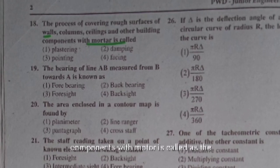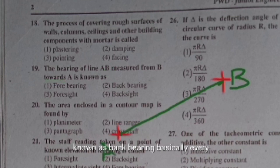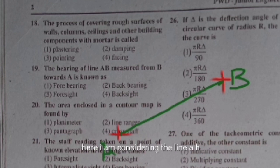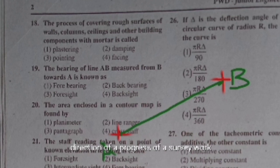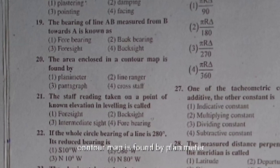If the bearing of line AB is measured from B towards A, it is known as back bearing. Every line has two bearings, one observed at each end. Bearing measured in the direction of the progress of survey work is called fore bearing (A to B), while bearing measured in the opposite direction is called back bearing (B to A).